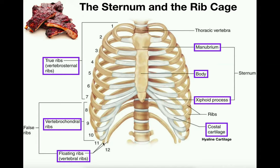The last two pairs — 11 and 12 — still connect to the vertebra just like all ribs, but notice they don't connect to any piece of cartilage, and they do not connect to the sternum. Therefore, these are called vertebral ribs. Sometimes you'll hear them referred to as floating ribs, because they do not connect on the other side to either cartilage or the sternum — they're more or less floating.